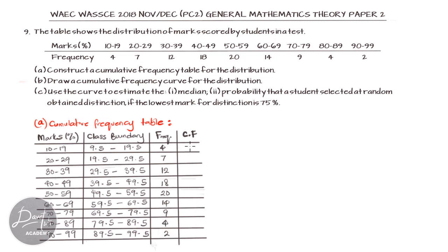To get the cumulative frequency, we add each of the entries: 4 plus 7 is 11, 11 plus 12 is 23, 23 plus 18 is 41, 41 plus 20 is 61, 61 plus 14 is 75, 75 plus 9 is 84, 84 plus 4 is 88, and 88 plus 2 is 90. The cumulative frequency is by adding the entries cumulatively—each new entry you add to the sum of the previous ones.